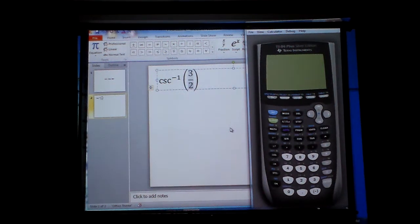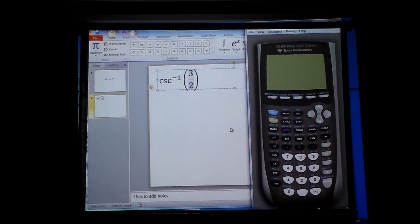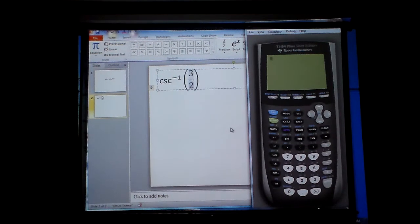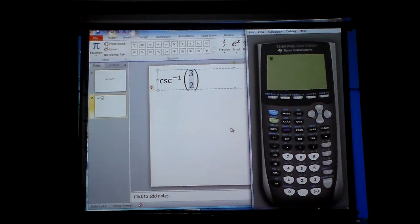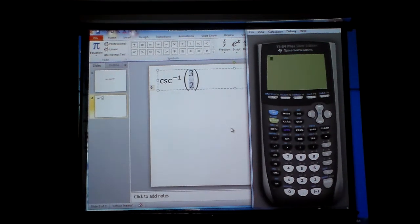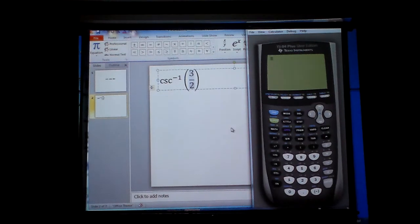Now I want to find the angle given that the sides are 3 over 2. Remember this is an arc cosecant, which means I need to find the angle.